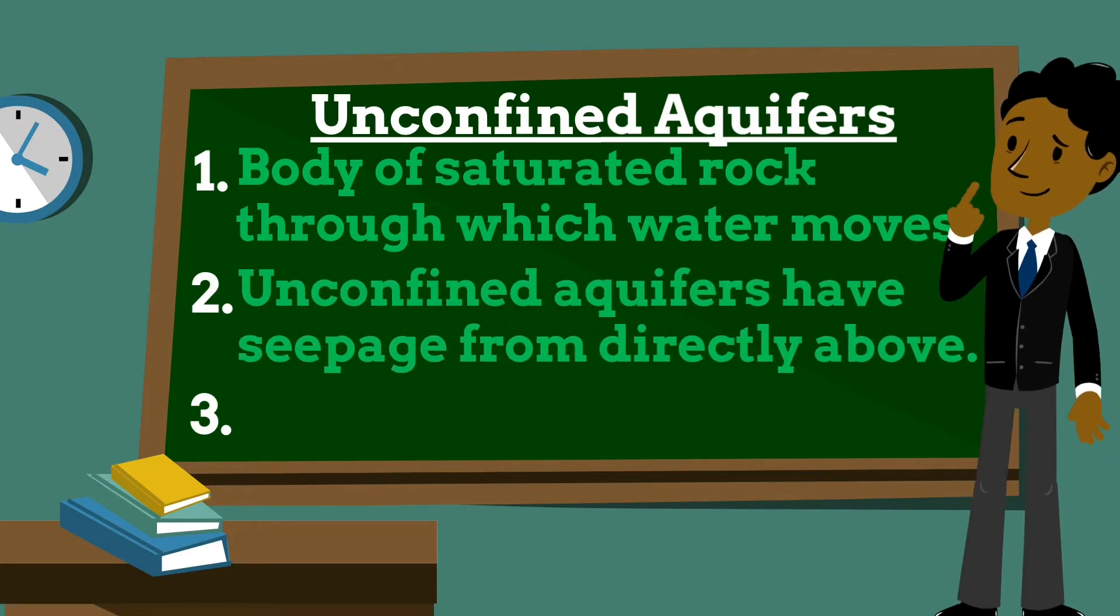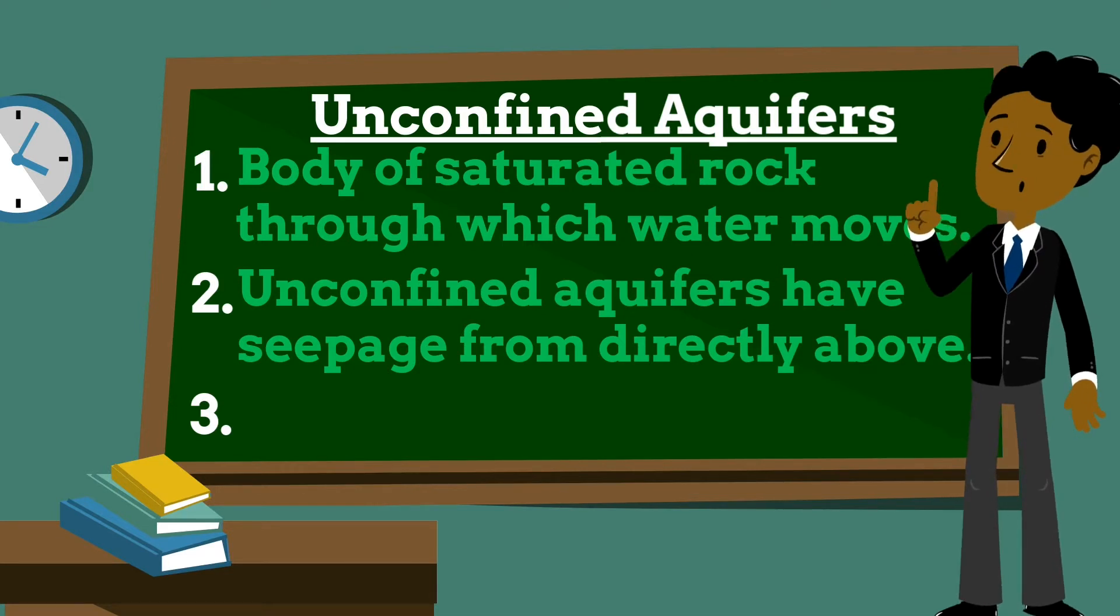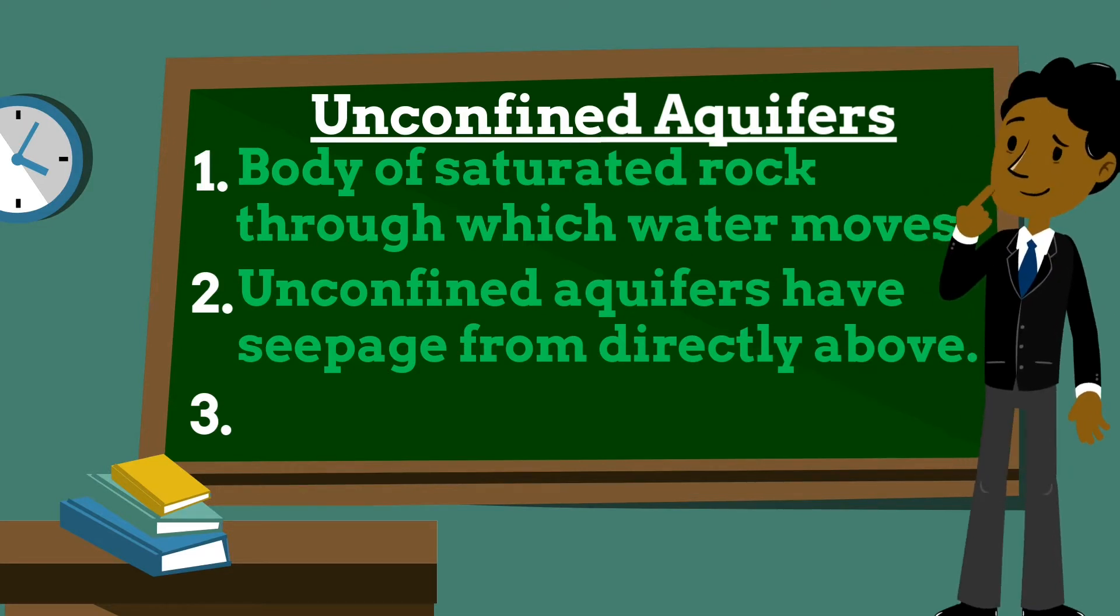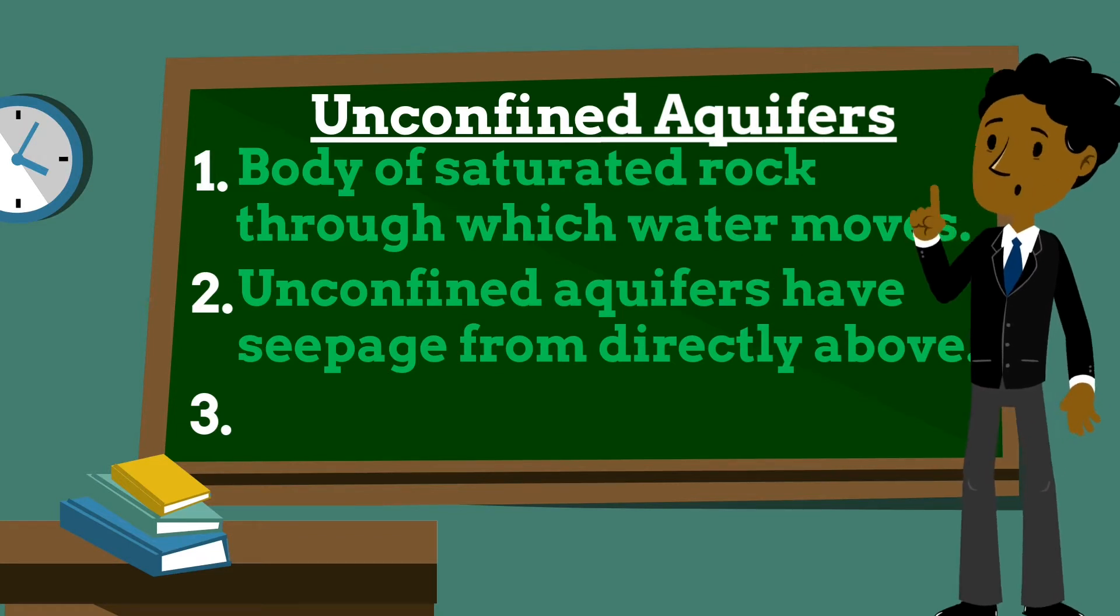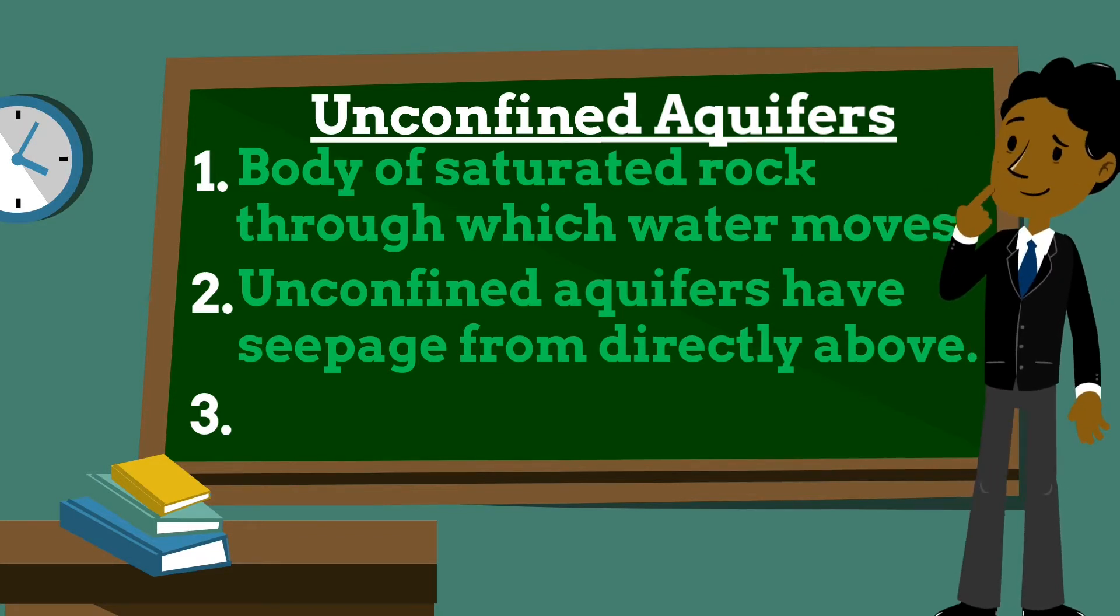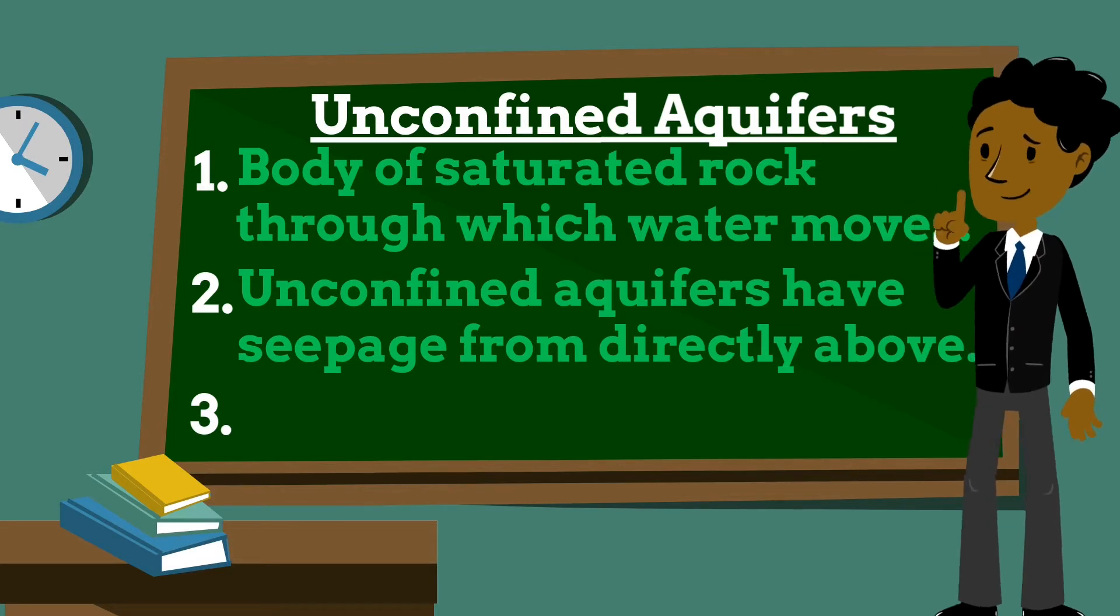Unconfined aquifers are those into which water seeps from the ground surface directly above the aquifer. Its upper surface, the water table, is open to the atmosphere through permeable material. As opposed to a confined aquifer, the water table in an unconfined aquifer system has no overlying impervious rock layer to separate it from the atmosphere.